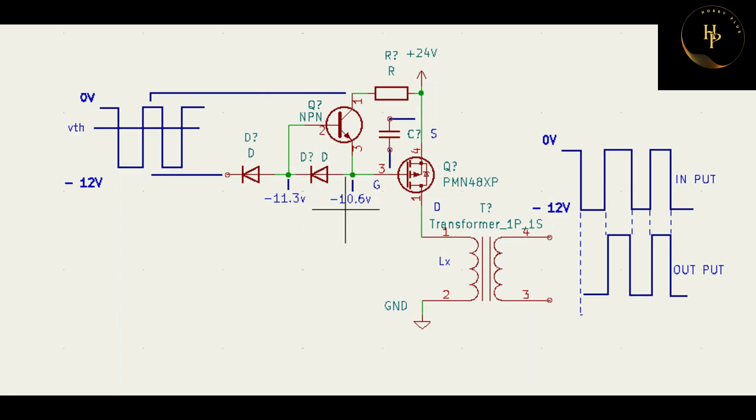For this diode, you get minus 10.6 volt here. That is your gate, that is your source, and that is your drain. Source connected to supply, drain connected to transformer, transformer operates, goes to ground.